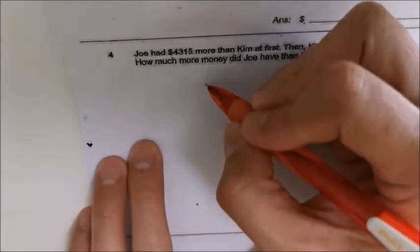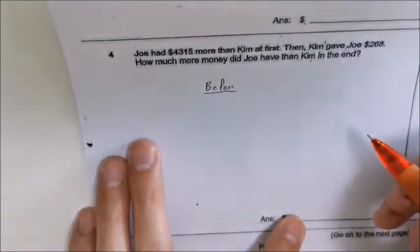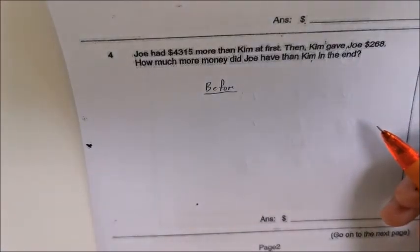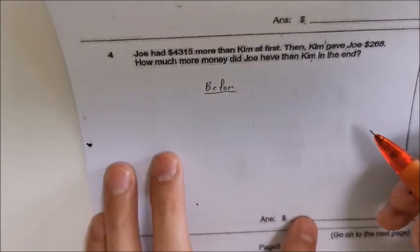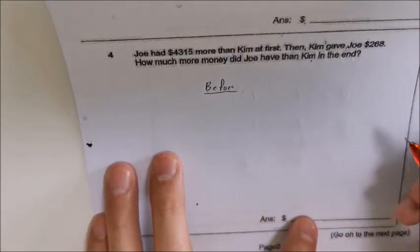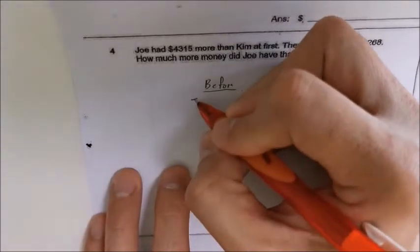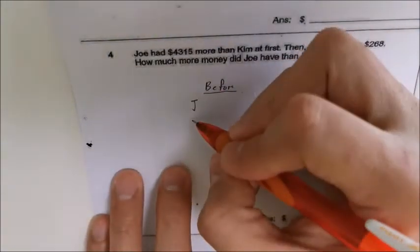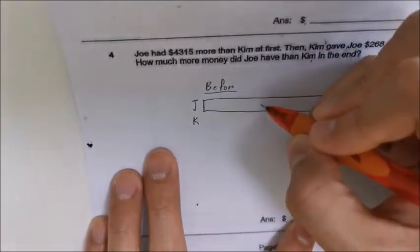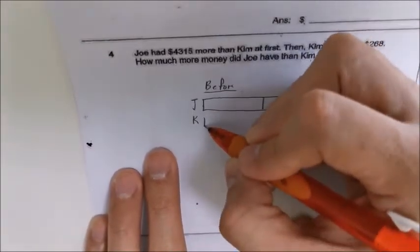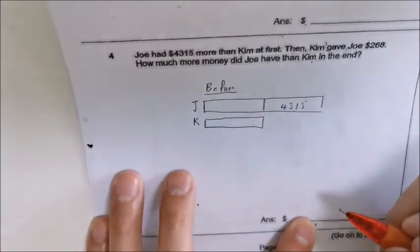What we need to do is just draw the model. For this question, we are only required to find the difference between the money the two of them have. We are not required to find out how much money Joe has or how much money Kim has, because it's impossible to find. Do not fall into the trap of trying to find the individual amounts. So Joe has this amount more than Kim — this is four thousand three hundred and fifteen dollars.